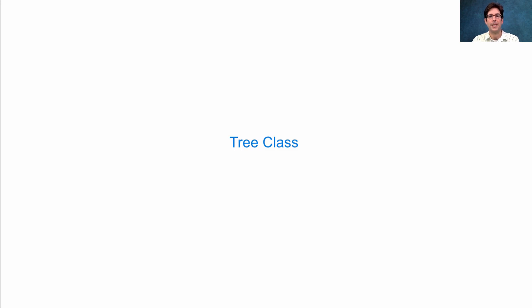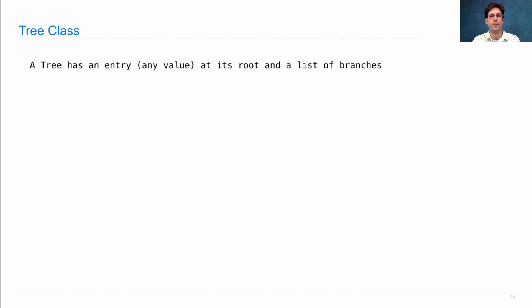Let's build a tree class to represent trees. In particular, we'll represent trees that have an entry at the root and a list of branches. There can be any number of branches. When a tree has zero branches, we call it a leaf.